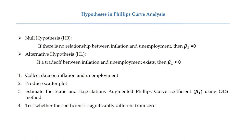Empirical research relating to the Philips Curve tests the null hypothesis, which states that there is no relationship between inflation and unemployment — in other words, that beta1 is zero. The alternative hypothesis posits that beta1 is less than zero, indicating an inverse relationship, or trade-off, between inflation and unemployment.